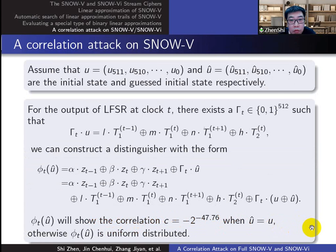The last part is to launch a correlation attack on SNOW-5 using the distinguisher. Assume u and u hat are the initial state and the guessed initial state, respectively. The distinguisher will show the correlation if u hat equals u. Otherwise, the distinguisher phi t shall be uniformly distributed.